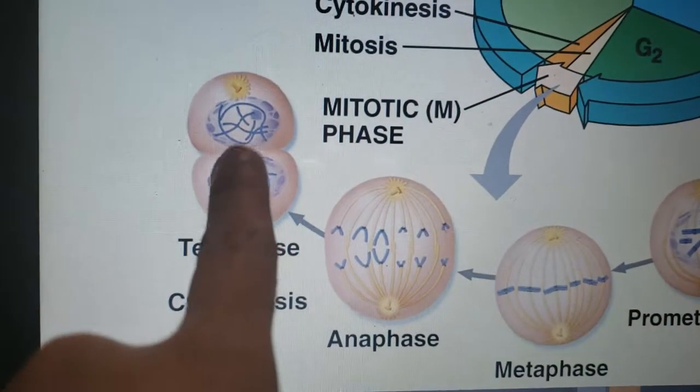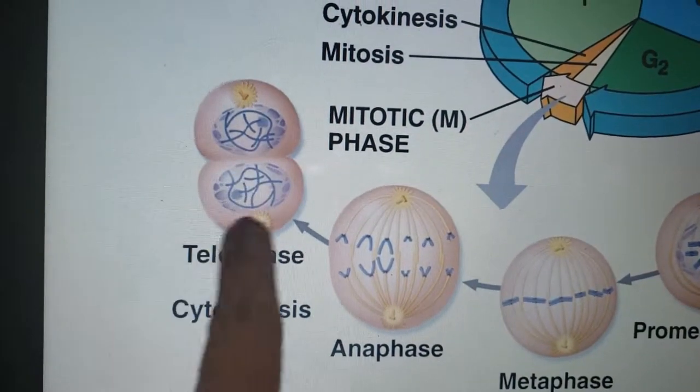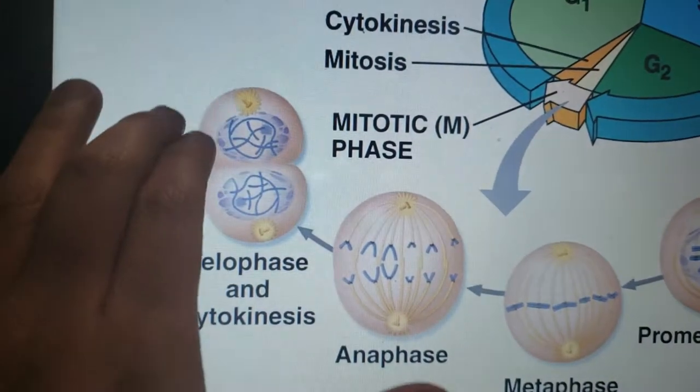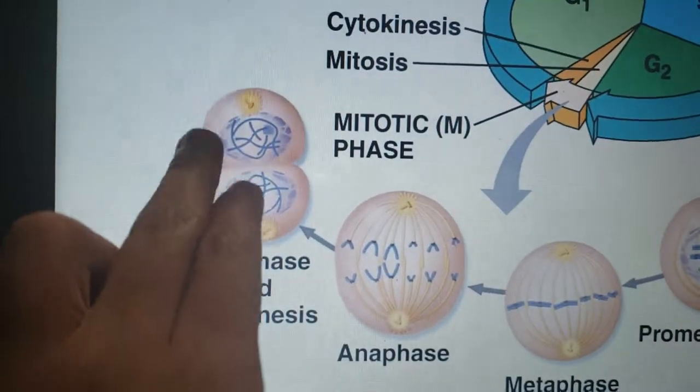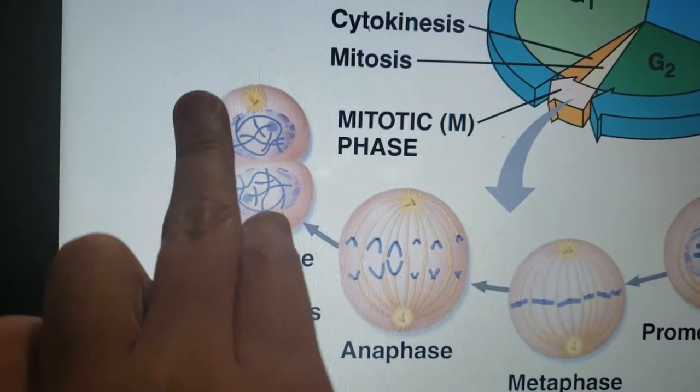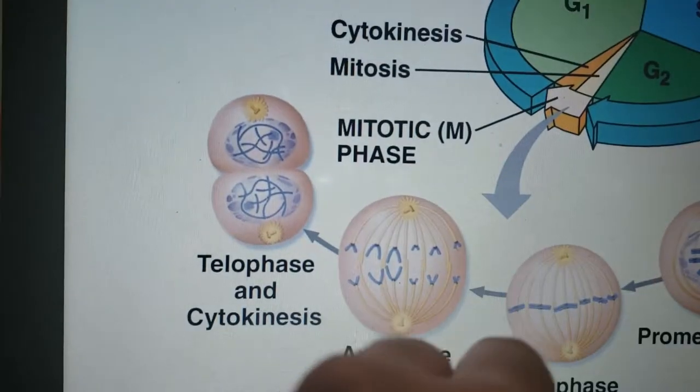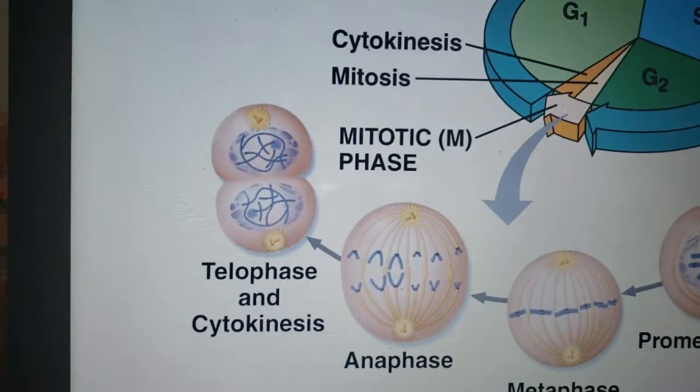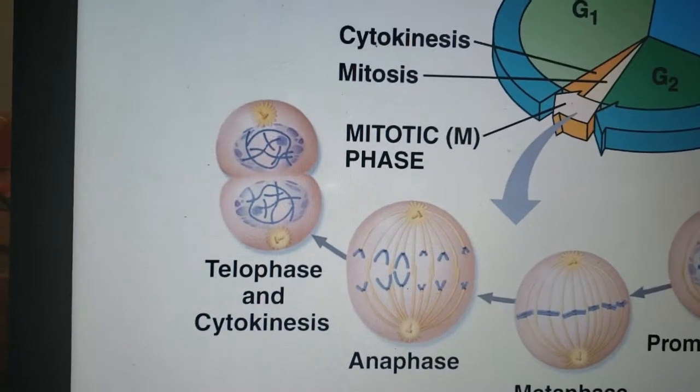Here we have telophase, where the chromosomes separate and we start seeing the cell membrane around the two cells. Then at the end we have cytokinesis.